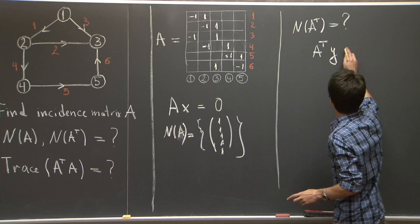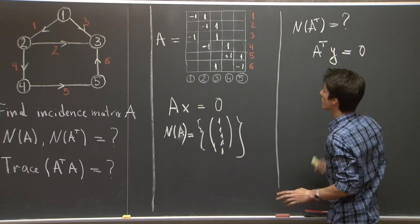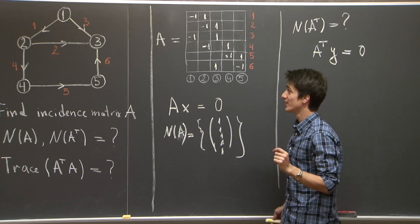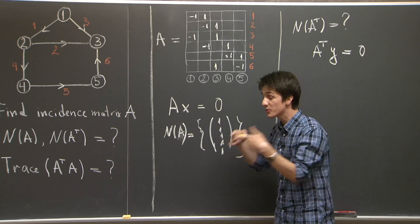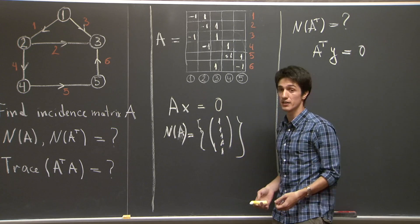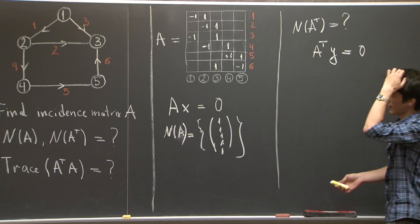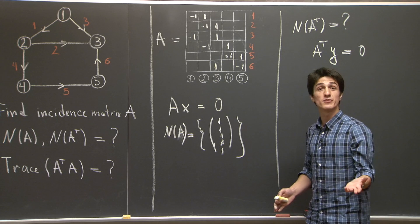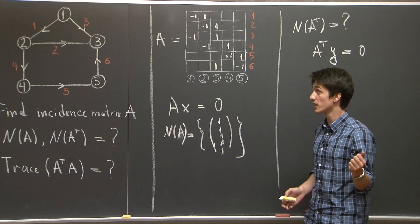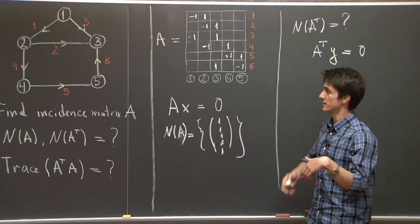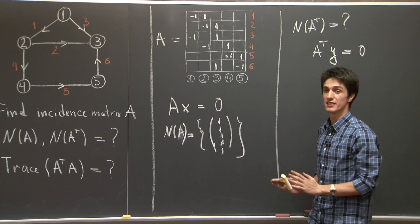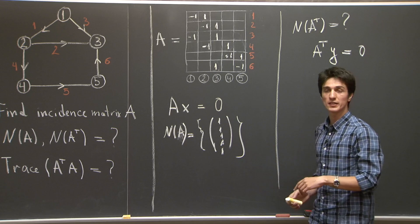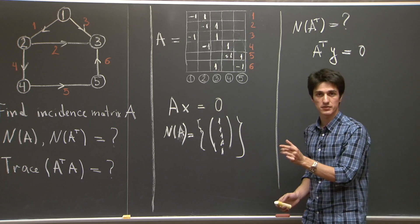So, A transpose y being equal to 0 means that there is a balance in the circuit, that the currents that flow into each node equal the currents that flow out of it. And it's fairly easy to find such configurations of currents that satisfy this balance equation.